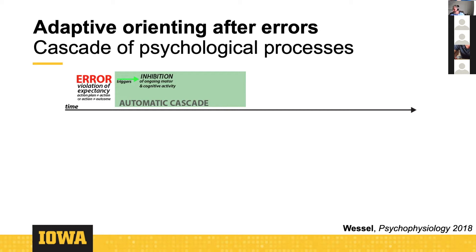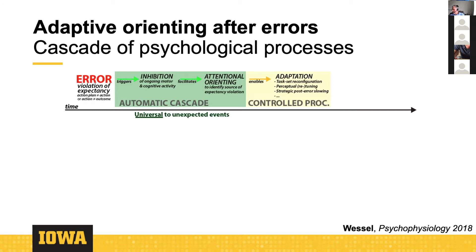The purpose of this inhibitory effort is to facilitate attentional reorienting — specifically towards finding what produced the violation of expectancy. This cascade of inhibition and attentional orienting is universal to all unexpected events, not just action errors. But if the attentional orienting phase identifies the source of the violation as an action error, then controlled processing kicks in, which can be highly specific to the type of error — task set reconfiguration, perceptual retuning, and so on — ultimately leading to increased accuracy.